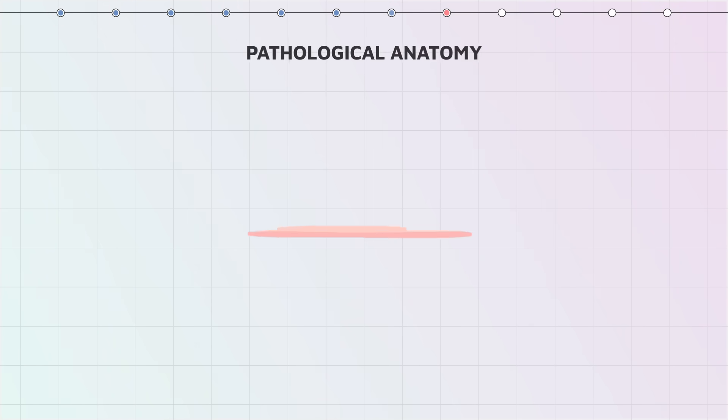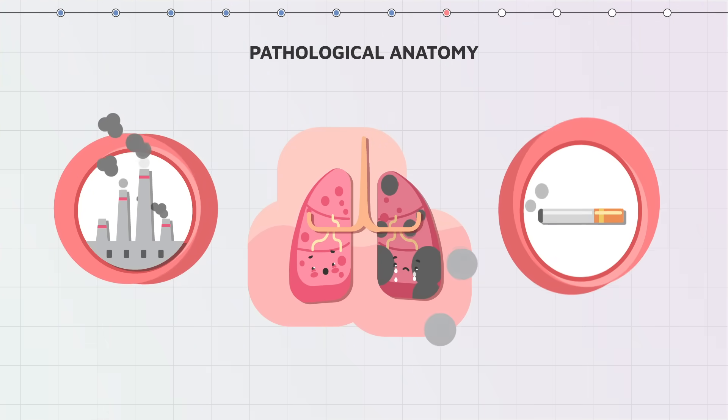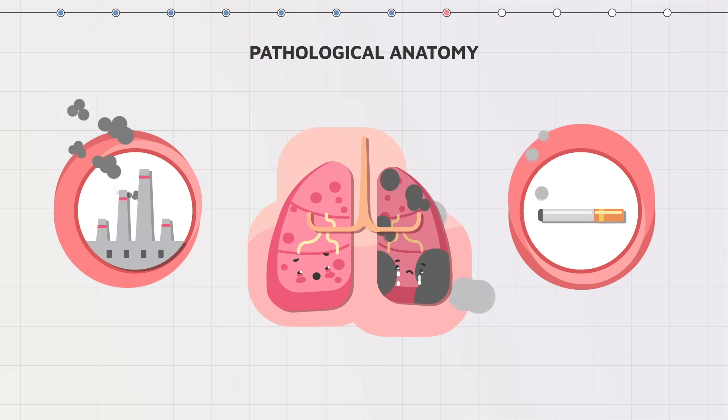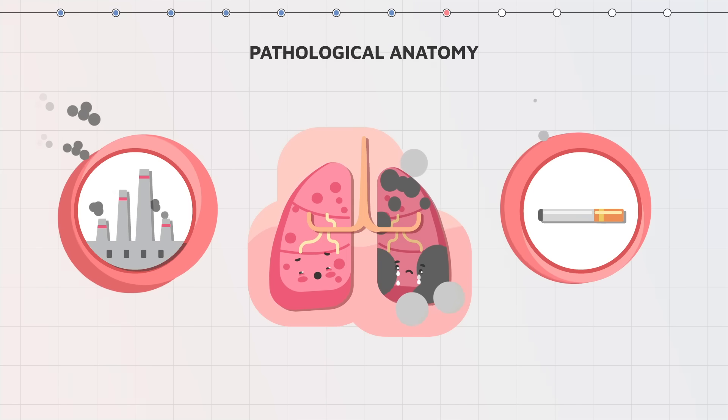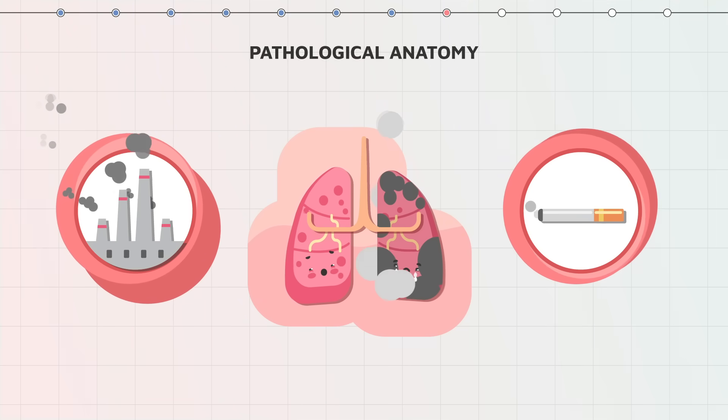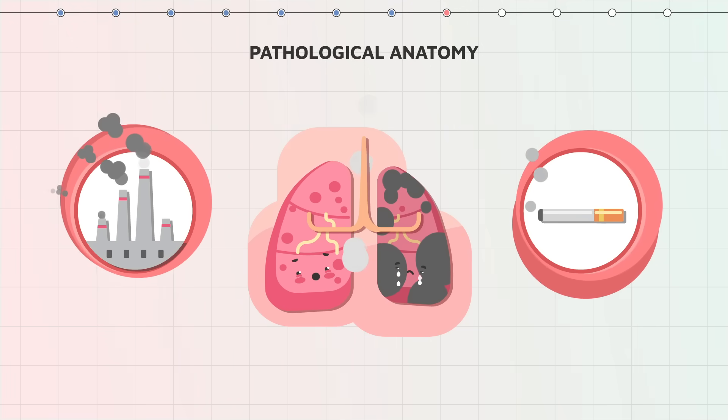Pathological anatomy studies structural changes and abnormalities caused by diseases or congenital disabilities.